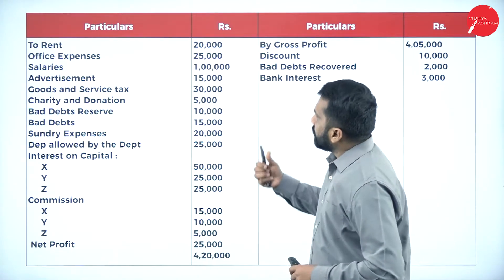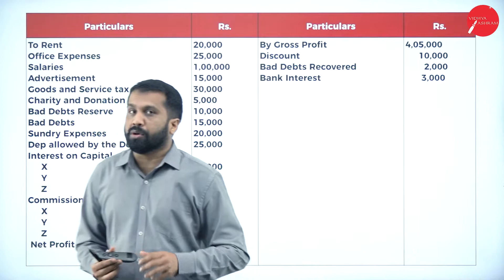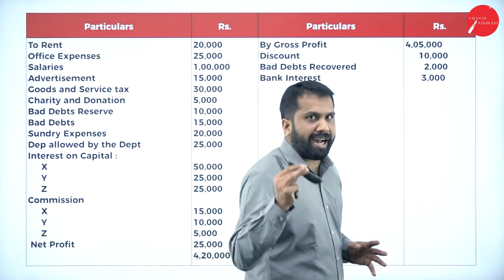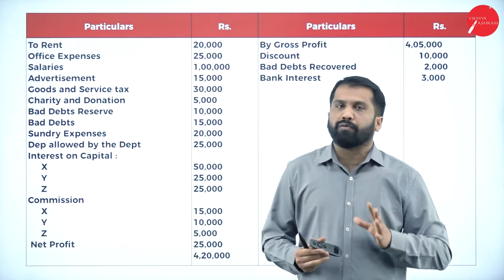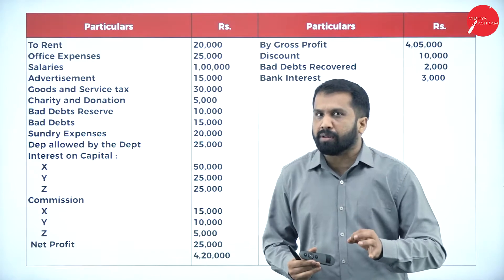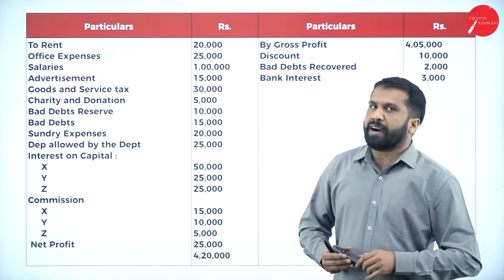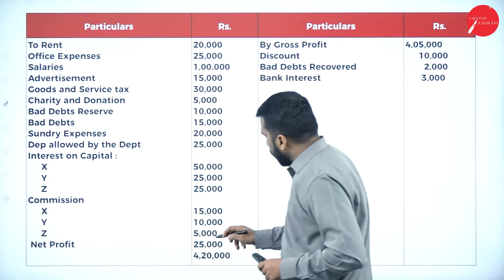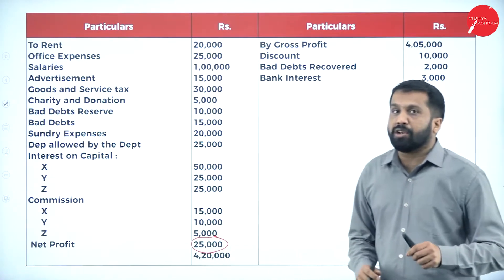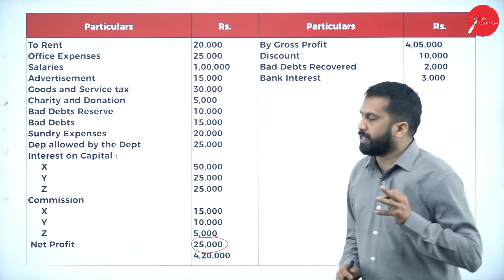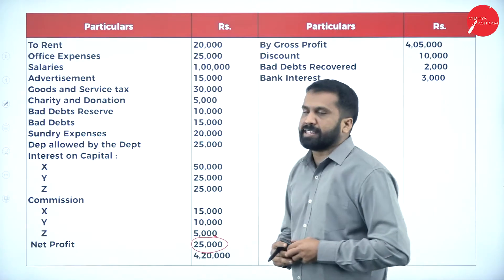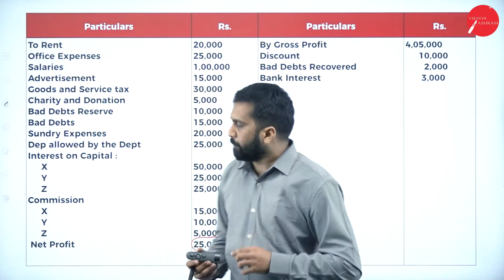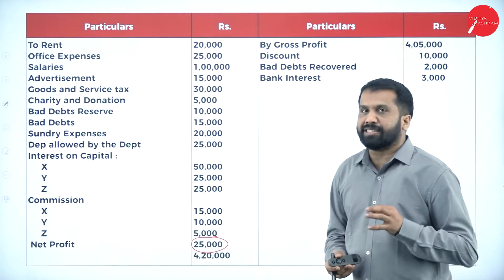Now, what we are supposed to do is find out the book profit. How do we find out book profit? You have to start your problem with net profit. The net profit is already given — it is 25,000. Start your problem with 25,000. Now add all inadmissible expenses. Before that, we'll see the adjustments.